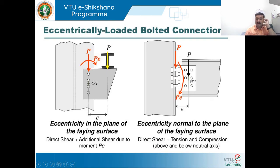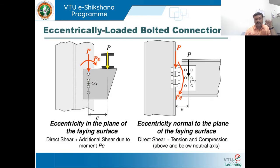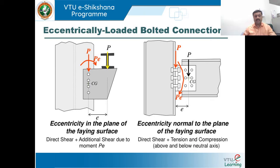Extra angles are often provided to the bracket at the point where reactions are transferred. Bolts are subjected to combined shear and tension per IS 800:2007 clause 10.3.6, where (V_sb / V_dsb)² + (T_b / T_db)² ≤ 1. Here V_sb = P/n, V_db = f_u / (√3 × γ_mb) × (n_n × A_nb + n_s × A_sb), T_b = M/n divided by Σy_i², and T_db = 0.9 × f_ub × A_n / γ_mb. I will now teach the problems for this case.